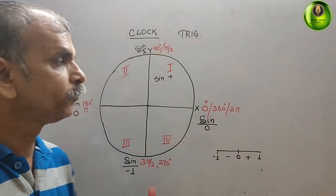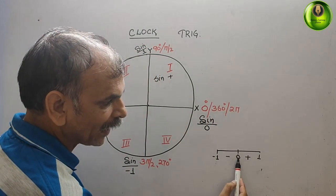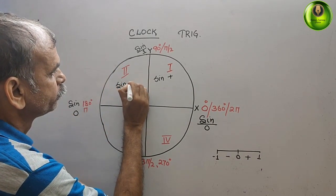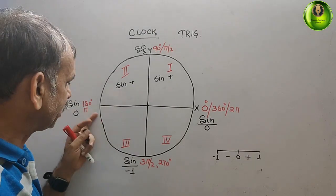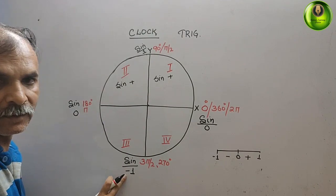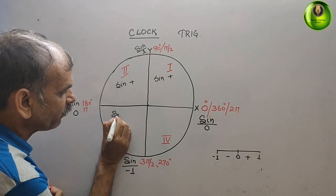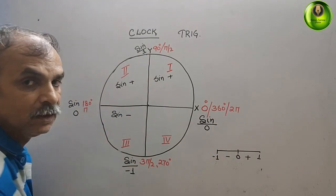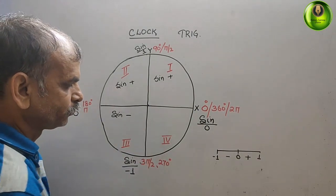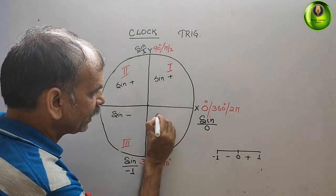In the third quadrant, sine goes from 0 to minus 1, and 0 to minus 1 is negative. So whatever value we get in the third quadrant will be negative. In the fourth quadrant, it is minus 1 to 0, which is again negative, so sine is negative there as well.